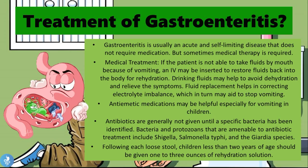Treatment. Gastroenteritis is usually an acute and self-limiting disease that does not require medication, but sometimes medical therapy is required. If the patient is not able to take in fluids by mouth because of vomiting, an IV may be inserted to restore fluids for rehydration. Drinking fluids may help to avoid dehydration and relieve symptoms. Fluid replacement helps in correcting electrolyte imbalance, which may aid in stopping vomiting. Antiemetic medications — which prevent or stop vomiting — may be helpful, especially for children. Antibiotics are generally not given until a specific bacteria has been identified; bacteria and protozoans amenable to antibiotic treatment include Shigella, Salmonella typhi, and Giardia species. Children less than two years of age should be given one to three ounces of rehydration solution following each loose stool.